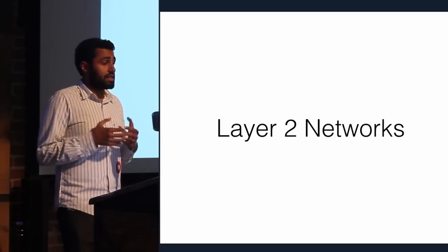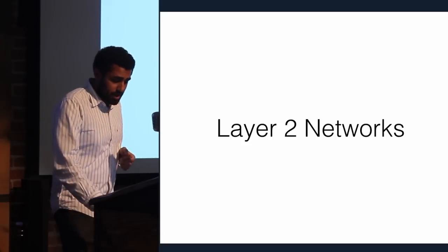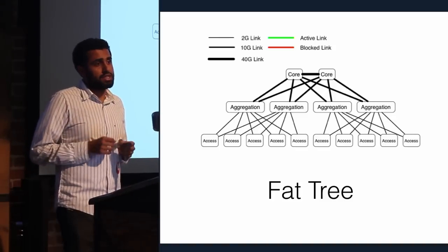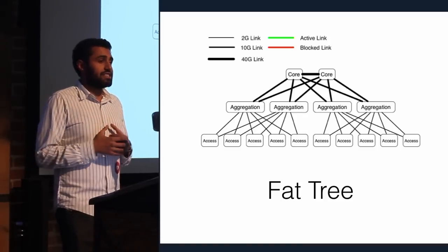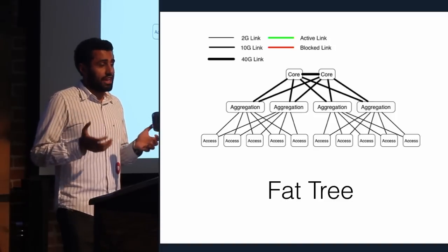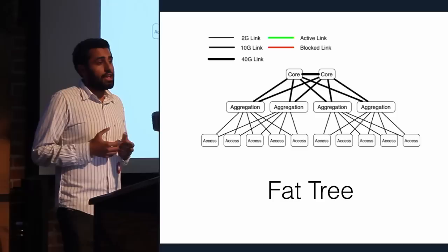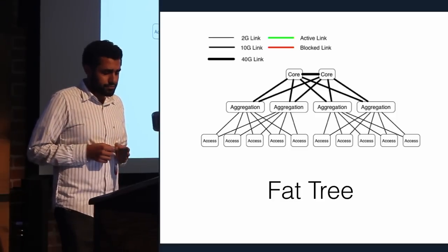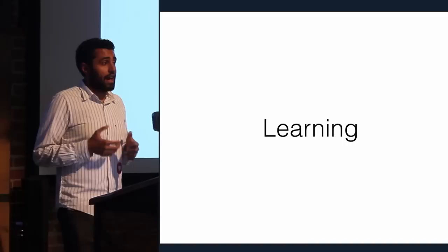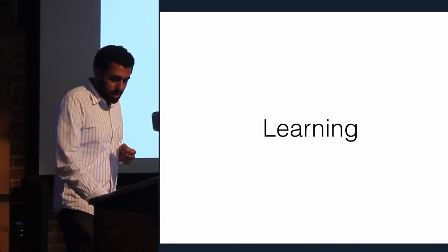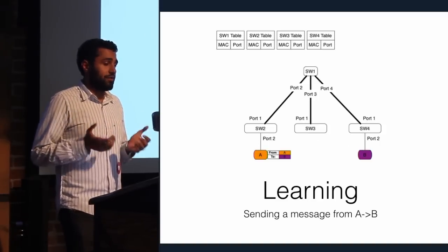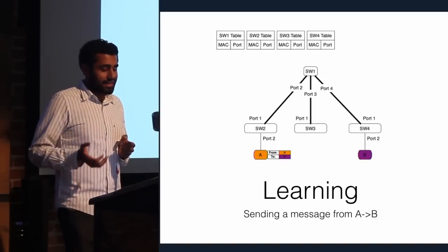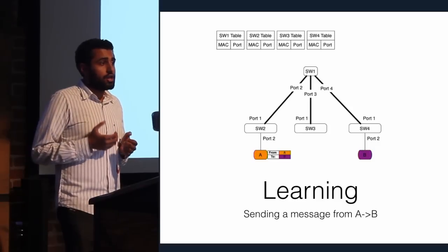Layer two networks actually look like fat trees. Fat trees are a specific implementation of the Clos topology that requires every layer above the lower layer to be the sum of the capacity of that lower layer — meaning you have to scale up your switches as you go up in the infrastructure, which becomes very expensive very quickly. In learning in a layer two network, the servers aren't necessarily announcing where they are — learning is a passive operation. If server A wants to send a packet to server B, none of the switches know where to send that traffic, handled as a case called unknown unicast.